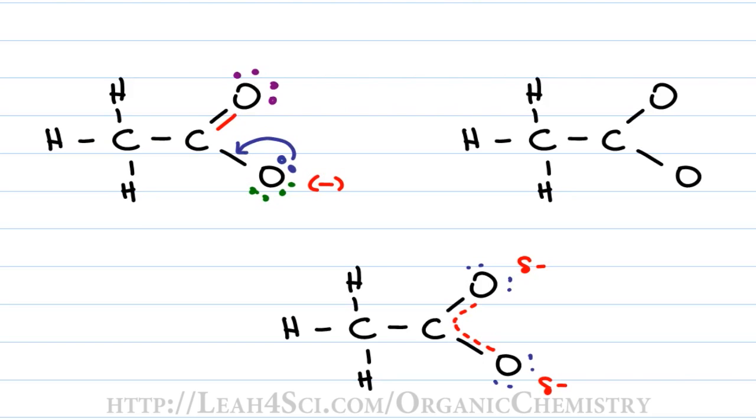If the electrons, such as this red bond, is moving onto an atom, you want to end the arrow on the atom to show that that's where they're going.